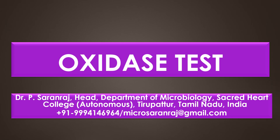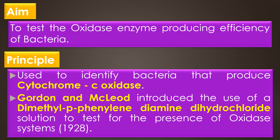Dear viewers, greetings. In this video we are going to see about the oxidase test. The aim of the oxidase test is to test the oxidase enzyme producing efficiency of bacteria. The principle of the oxidase test is used to identify bacteria that produce cytochrome c oxidase, an enzyme of the bacterial electron transport chain.